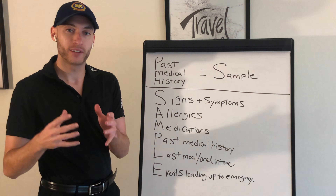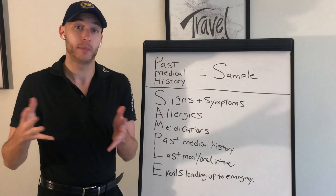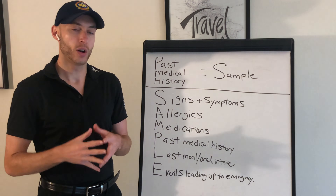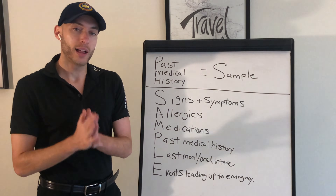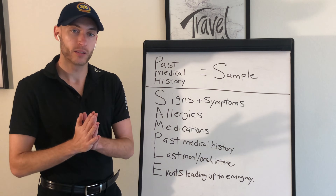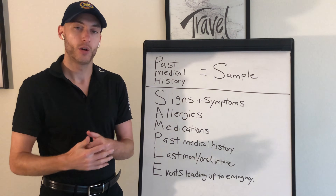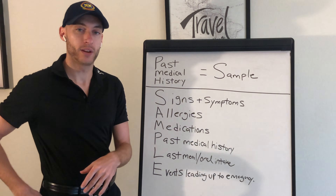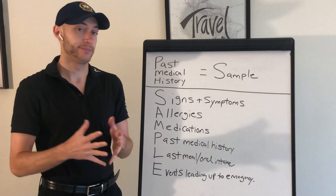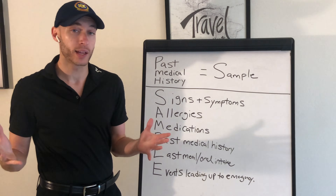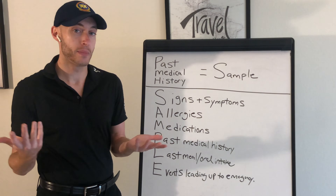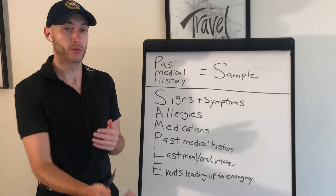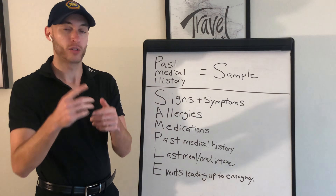M is medications — what does the patient take? Are they on any prescription medications? Don't forget over-the-counter stuff too. A lot of chronic disease patients will have a medication list they'll give you — they'll have it in their wallet. Healthy people who get into emergencies may not be on any meds, or it may not be known, especially if the patient is unresponsive.